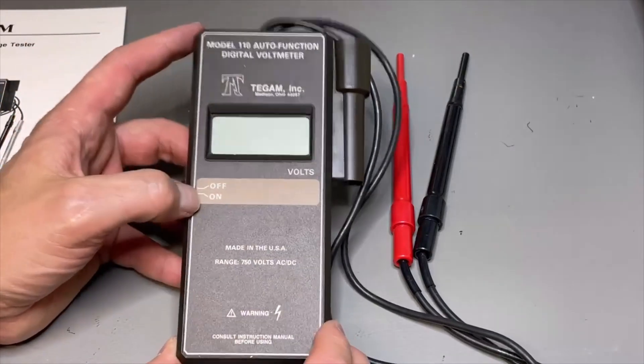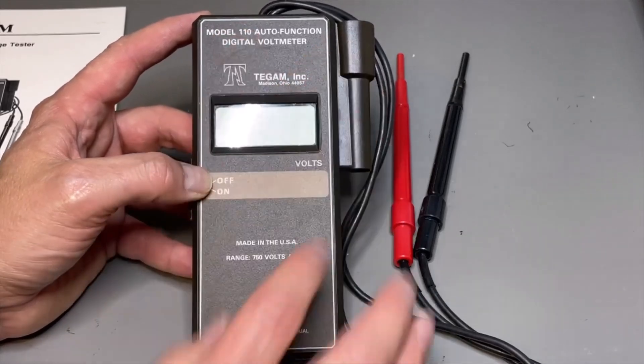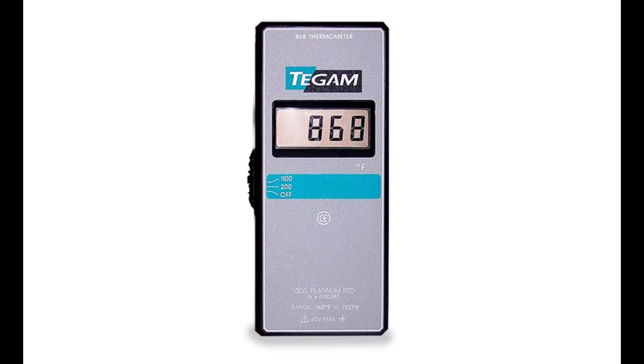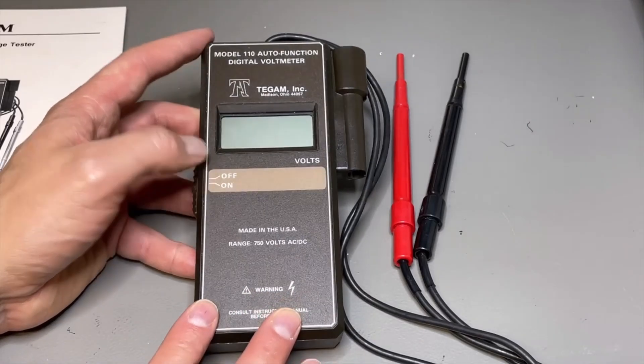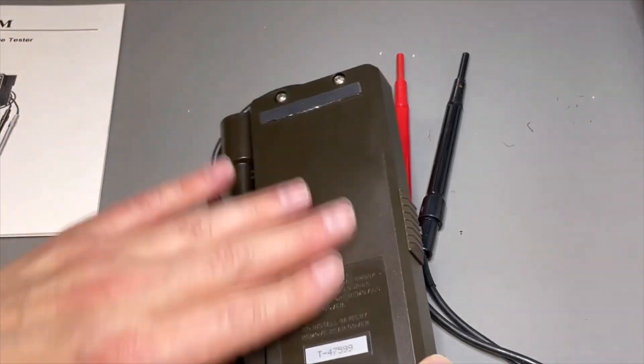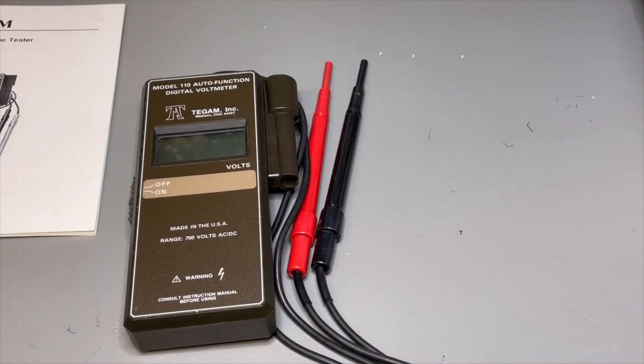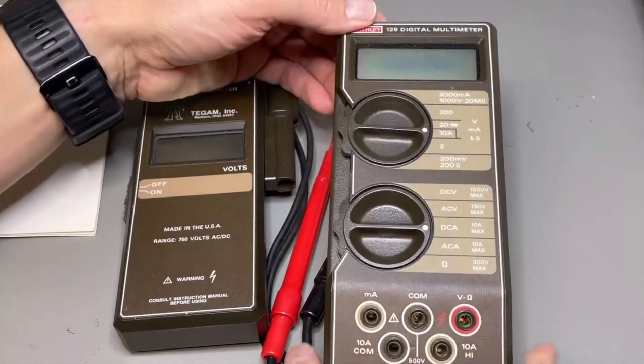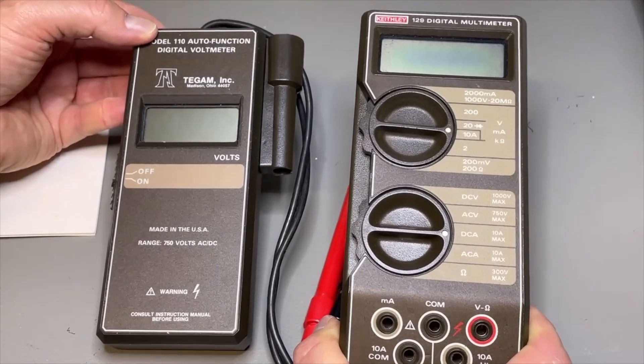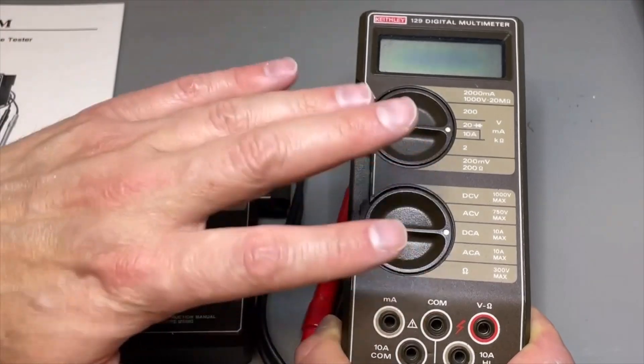It can do automatically AC/DC. Of course the AC component needs to be very low to be able to measure DC. Resolution is one volt. It can go up to 750 volts AC and DC. But if we look at the color, this really looks like a Keithley. And I looked at newer models from TGM.